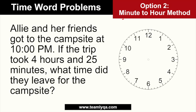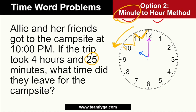For example, the time is 10 PM. The shorthand is at 12, and the longhand is at 12. We're going to subtract, so the movement is counterclockwise. The first thing you move is the minute hand. Starting from 12, I subtract 25 minutes. Each section on the clock is 5 minutes, so I count back 5, 10, 15, 20, 25. The minute hand ends up at 35 minutes.